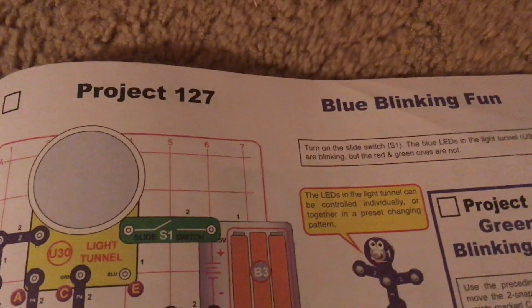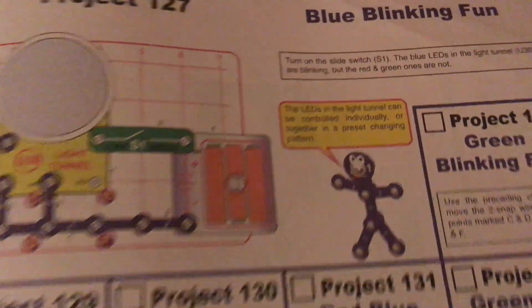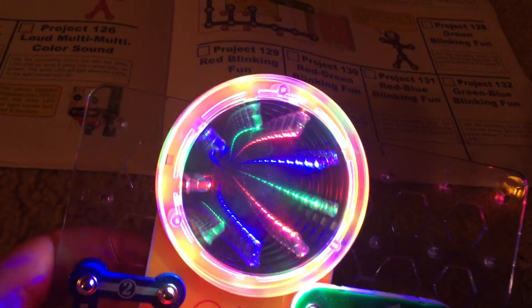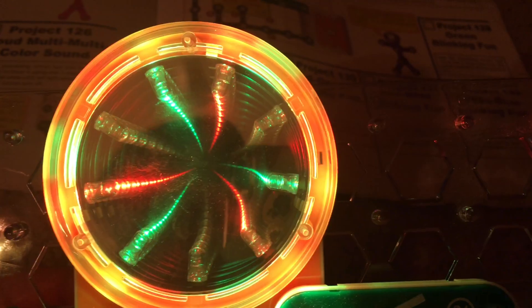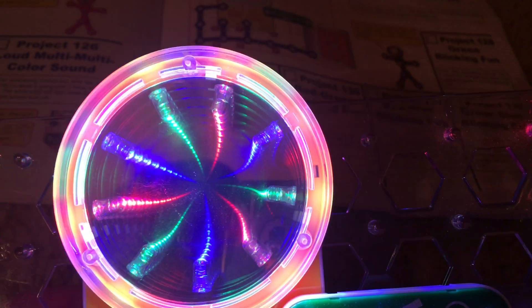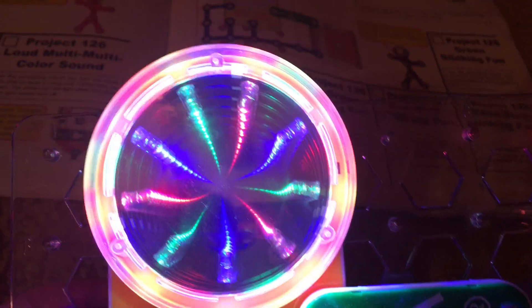Project 127, blue blinking fun. Using this circuit and turning on the slide switch, we will notice that all the LEDs of the light tunnel come on but the blue ones flash while the red and green ones stay on continuously.